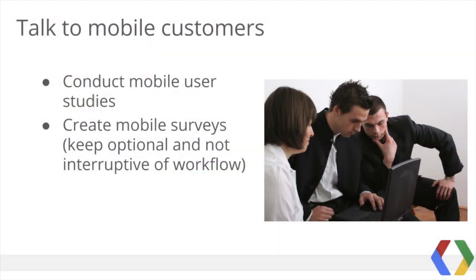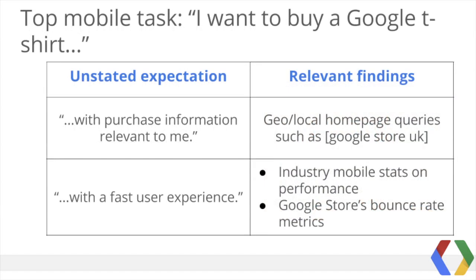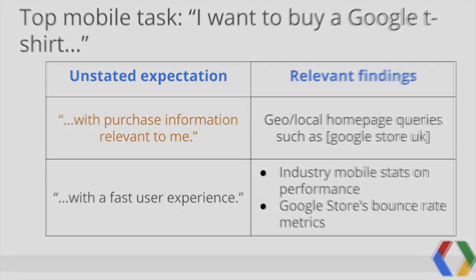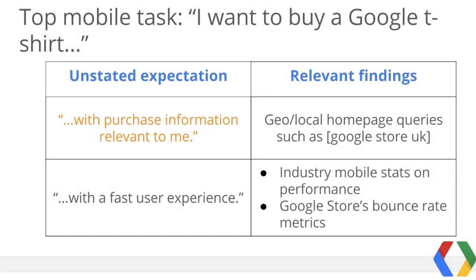So far we've looked mainly at readily available numbers, but if you have the time, another great way to understand mobile user intent is to ask visitors themselves. Conduct mobile user studies or create mobile surveys — just be sure the surveys are optional, not a pop-up window that interrupts the user's workflow. Judging from the data we've gathered, let's assume that one of the top tasks for the Google Store is a user who wants to buy a Google T-shirt. We also know some of the user's common, unstated expectations — for example, they want information relevant to their location, likely listing their currency and available shipping.